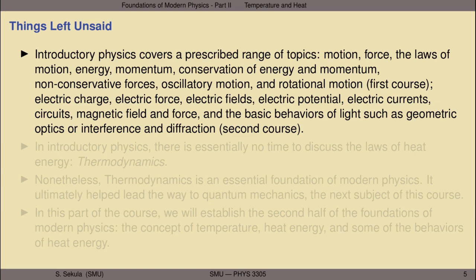In the second course in physics, we're able to cover electric charge, electric force, electric fields, electric potential, and electric currents, and the combination of all those things into electric circuits. Then we explore magnetic field and force, and the basic behaviors of light, such as geometric optics or interference and diffraction.